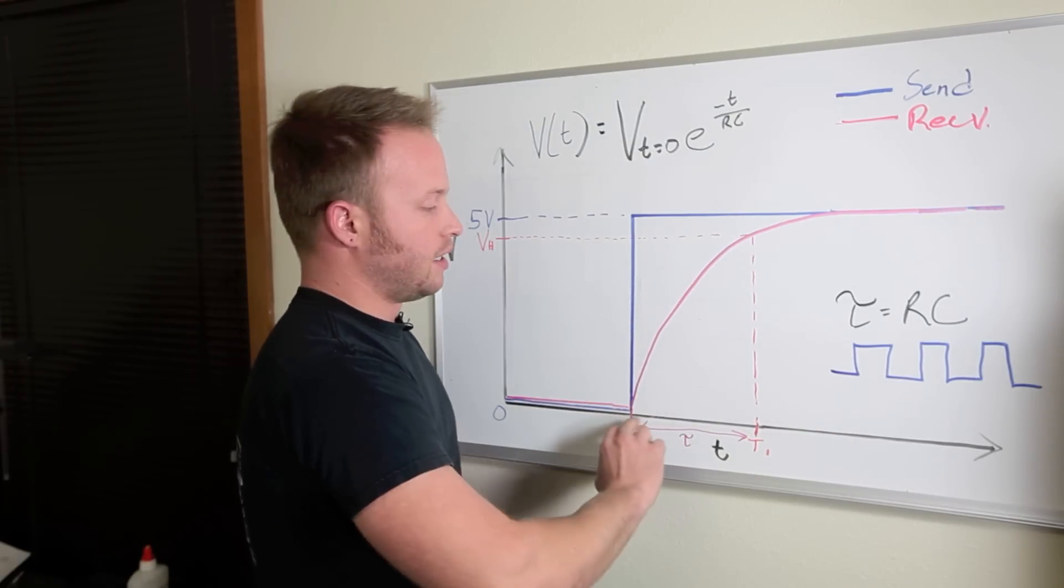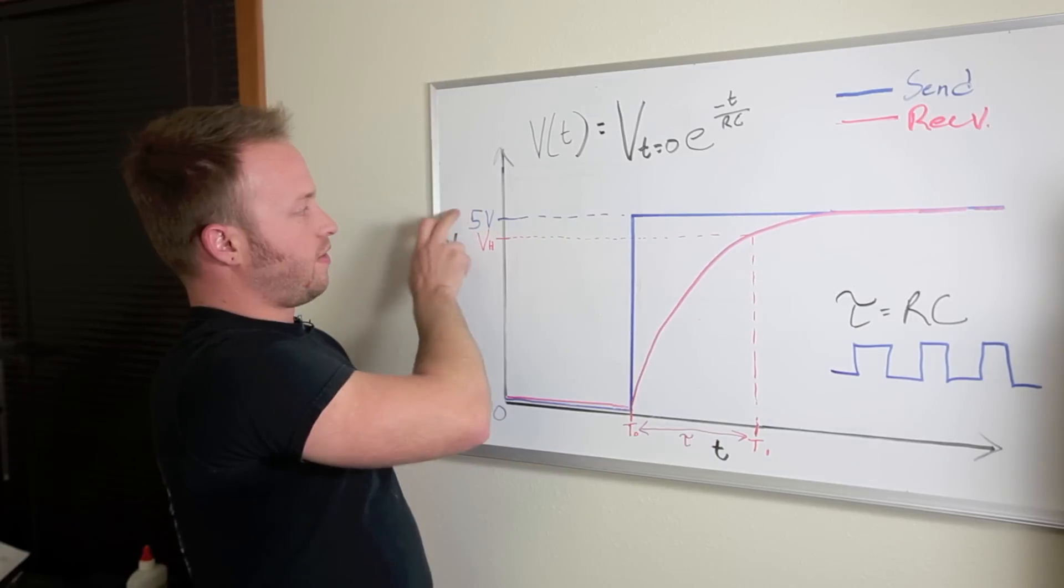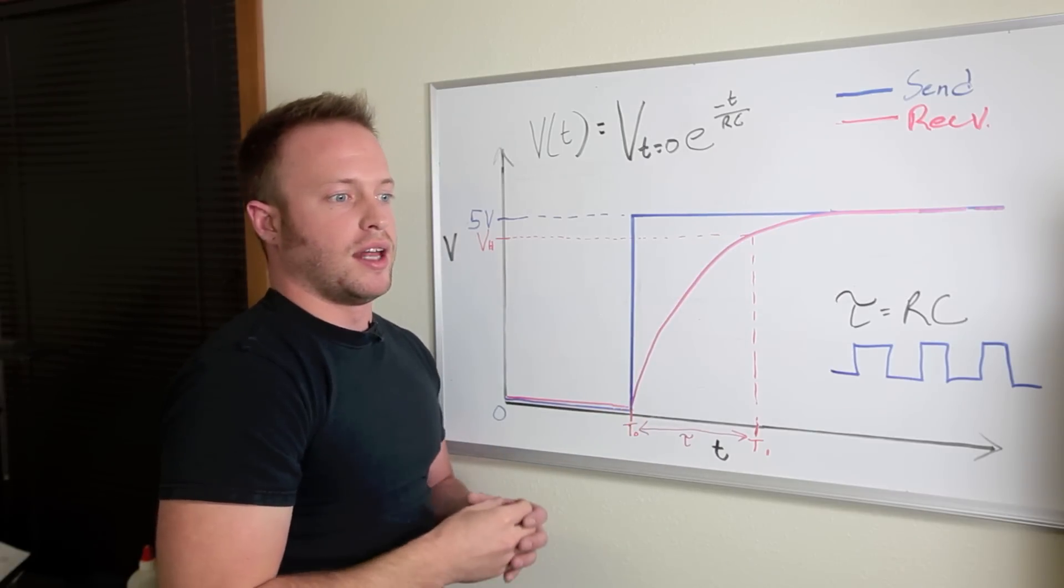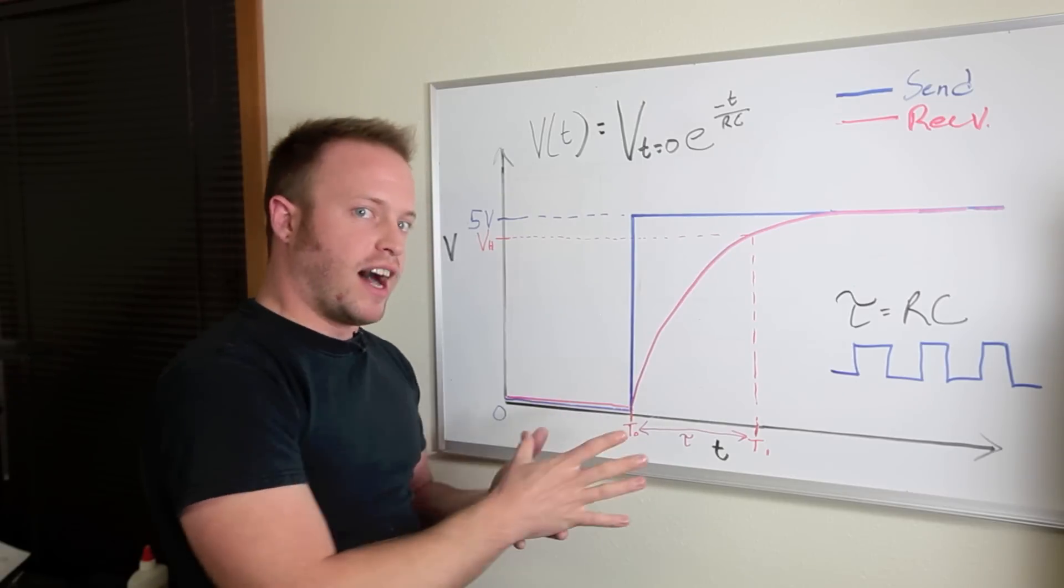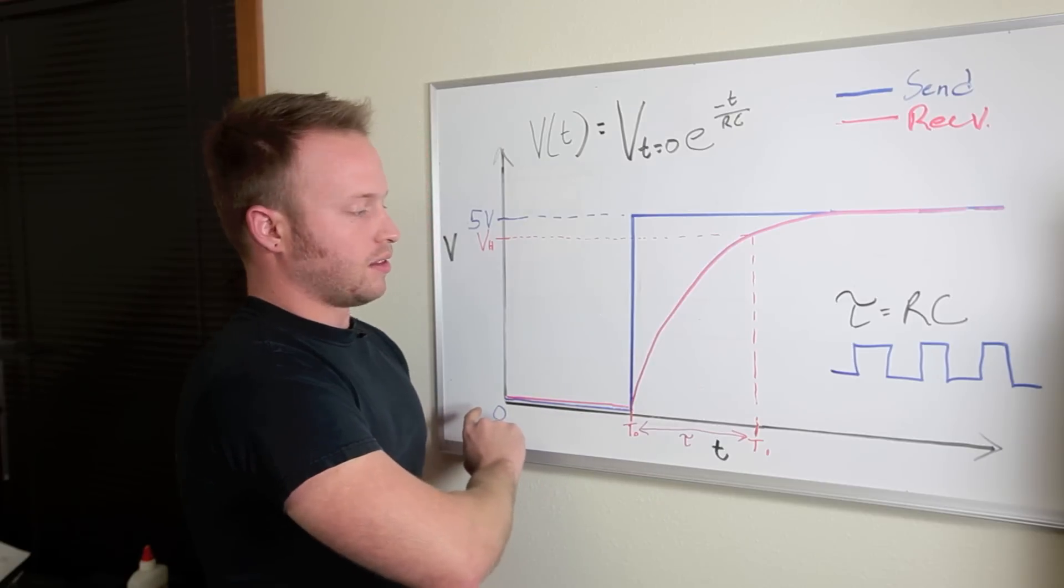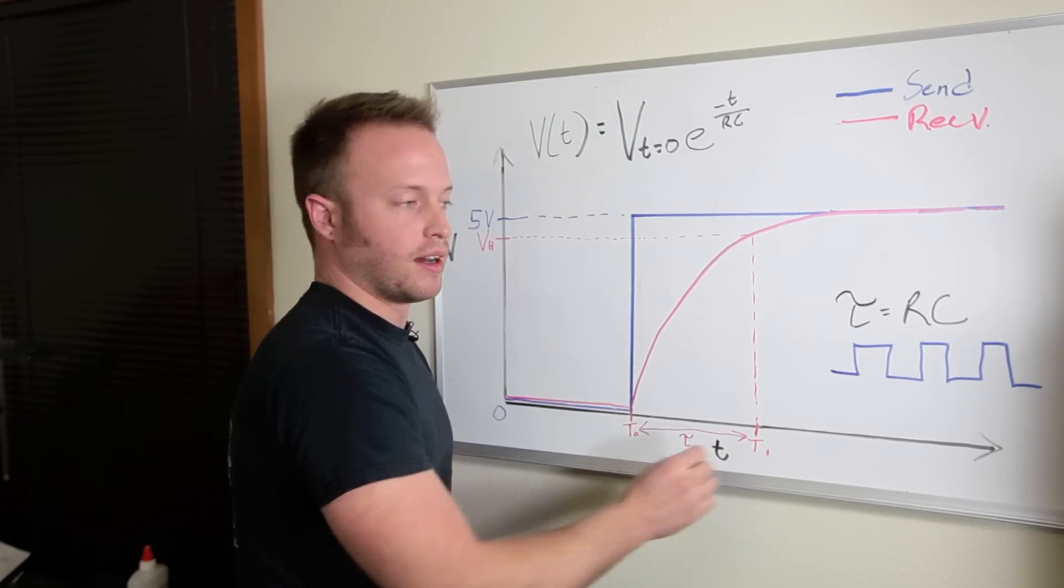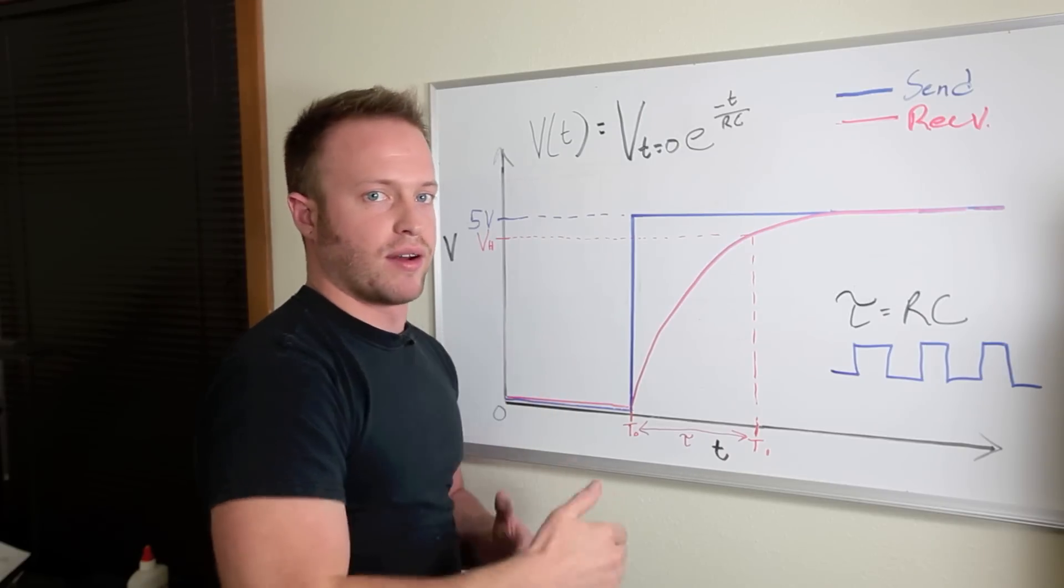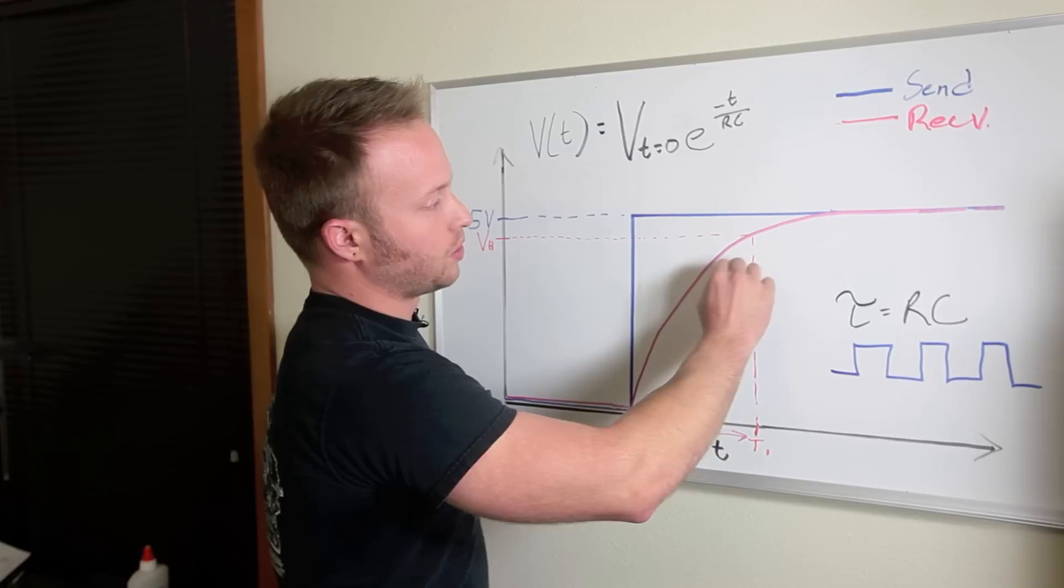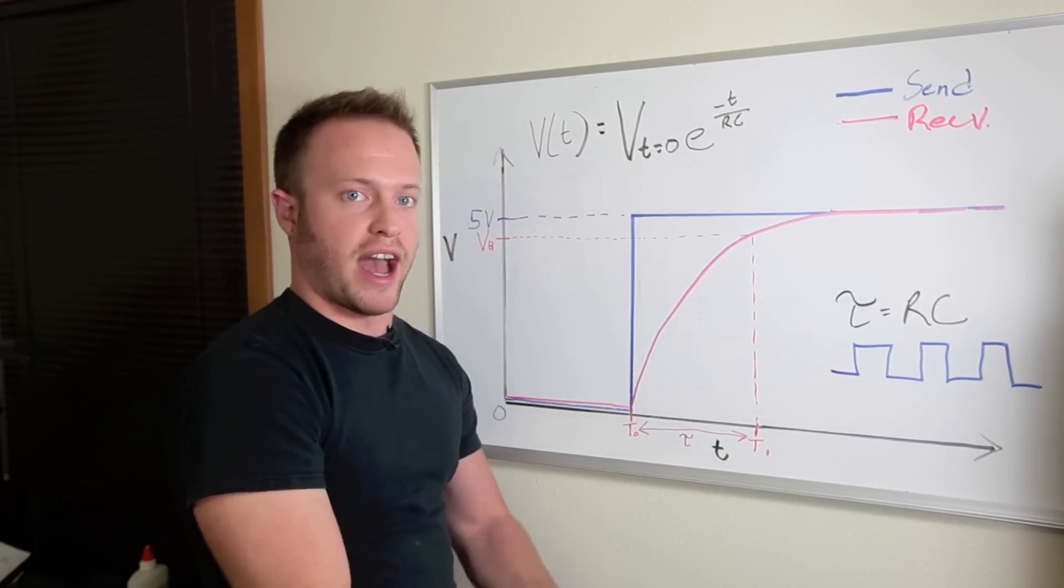So when the send pin goes high, the voltage across the resistor and capacitor, the receive pin, represented by this red line, goes up to five volts but it takes a while. If this is five volts, then a little bit lower than five volts would be the voltage required by the ATmega to detect a high voltage. Let's say this is the threshold for detecting a high voltage. What the library does is it sends the send pin high and the capacitor starts charging and the whole time in the stretch of time here, the function is counting. It's counting the time it is taken before the voltage on the receive pin has gone high. It's counting, and when the voltage on the receive pin finally hits the threshold voltage for the ATmega to detect a high voltage, it stops counting and spits out tau. It spits out that time constant.